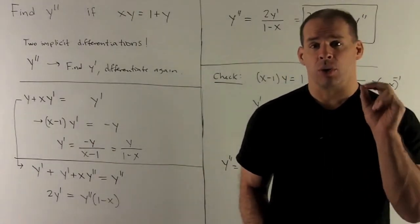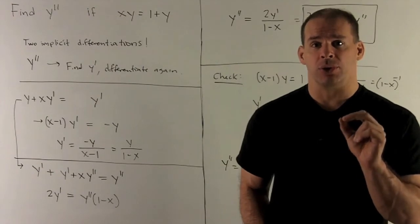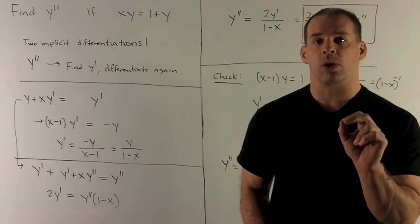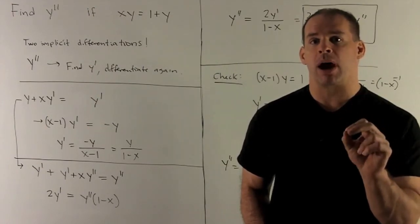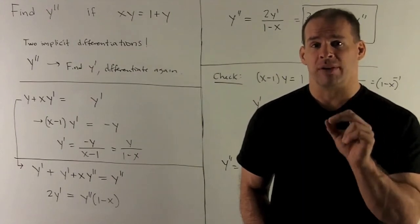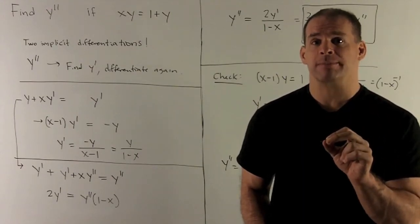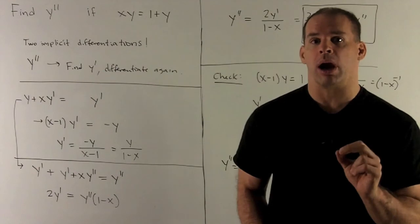y is going to go to y prime. x times y prime is going to, we're going to use the product rule. The x goes away, leaving me with y prime plus x. Then derivative of y prime with respect to x, that's just going to be our y double prime.